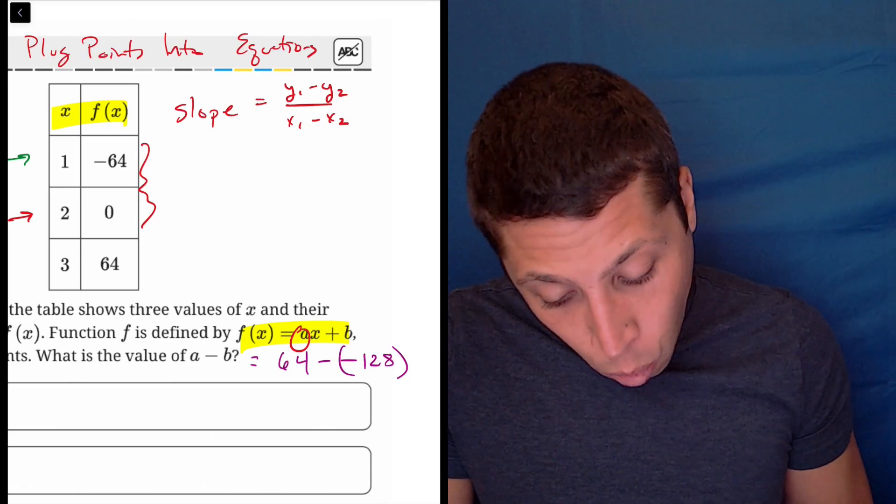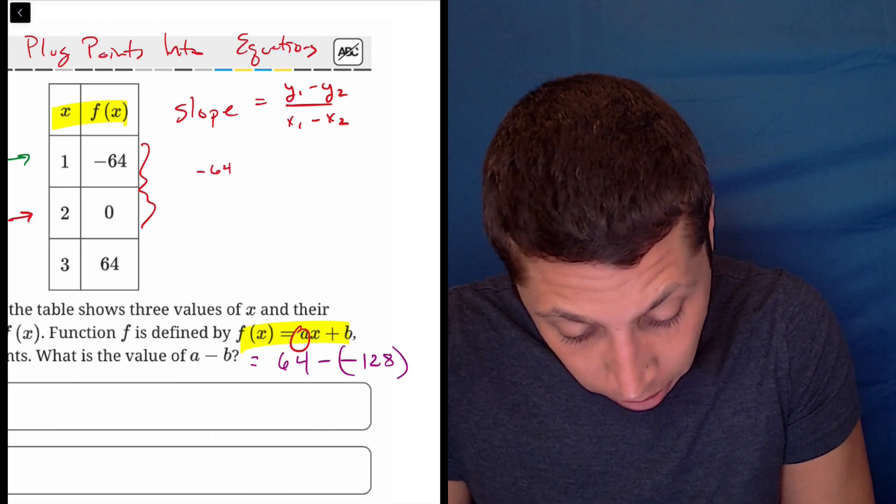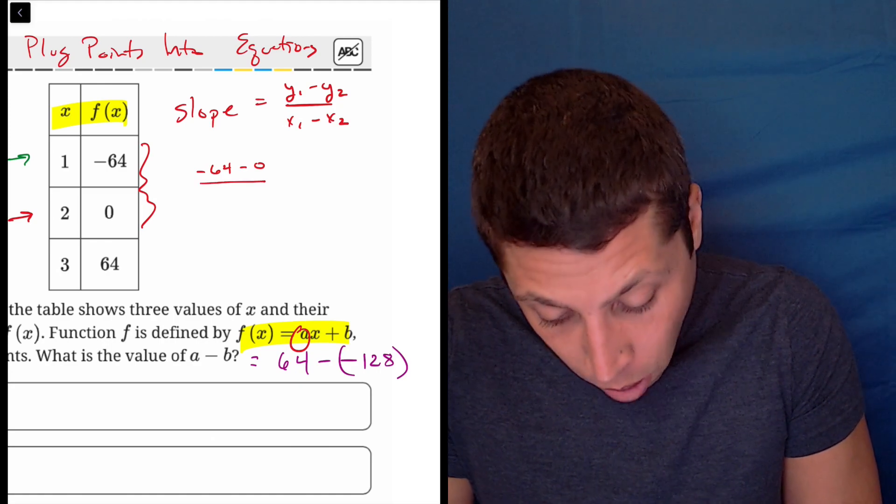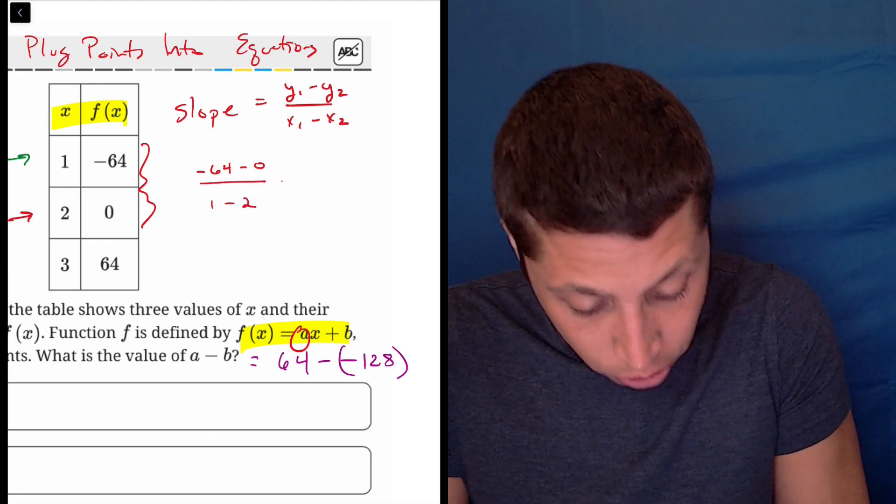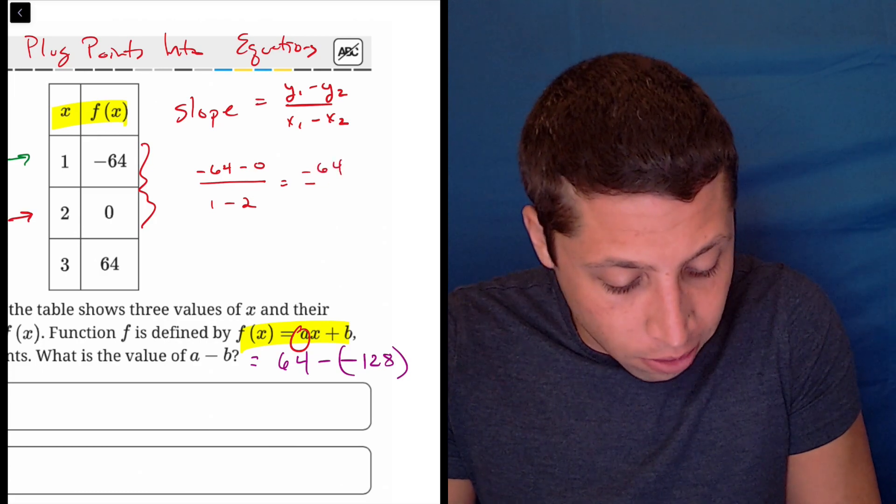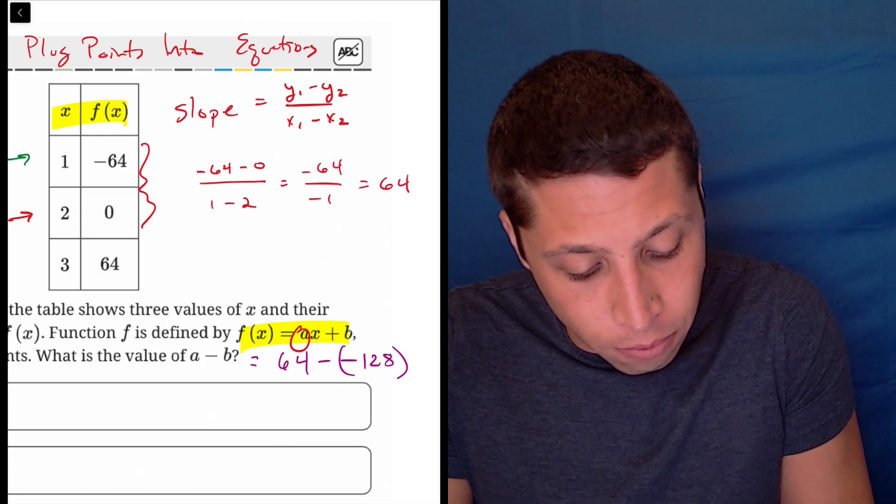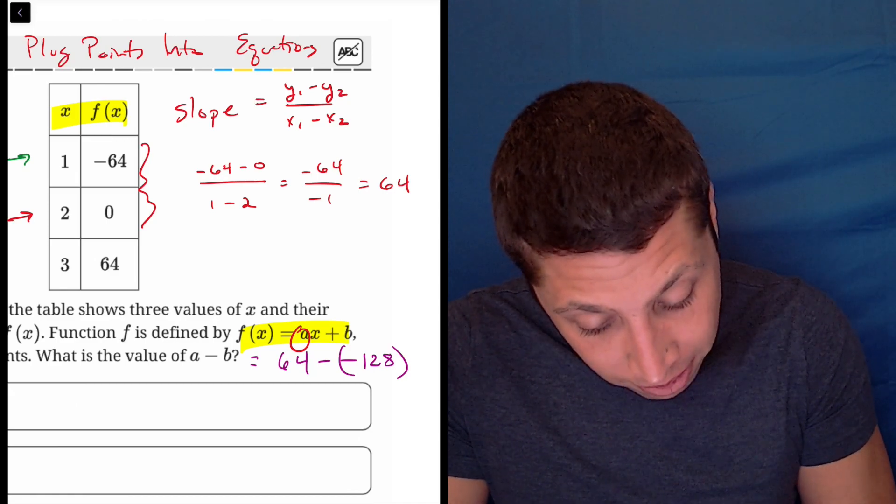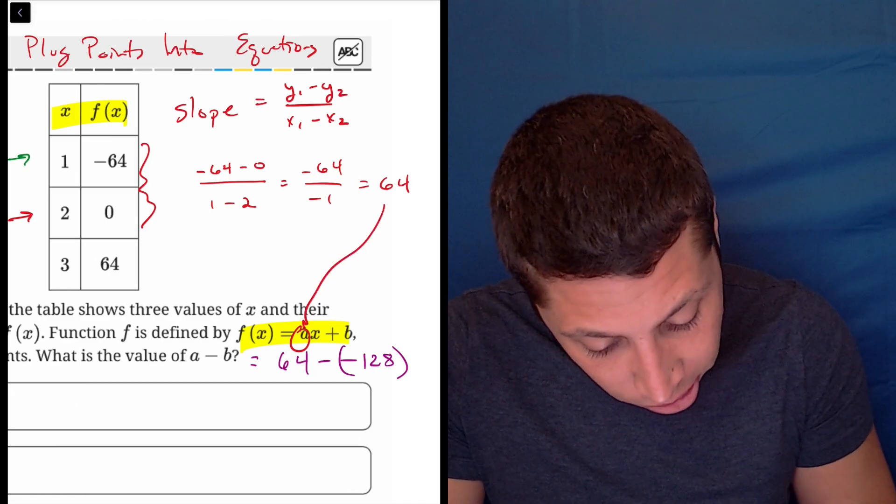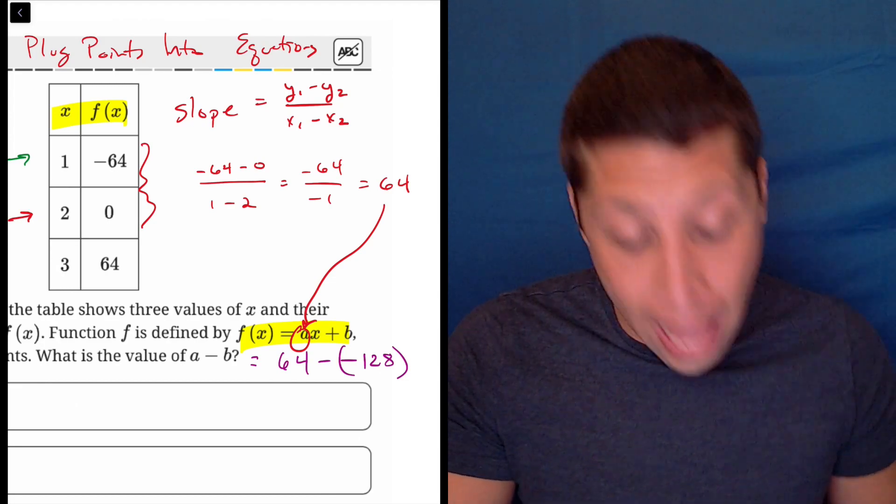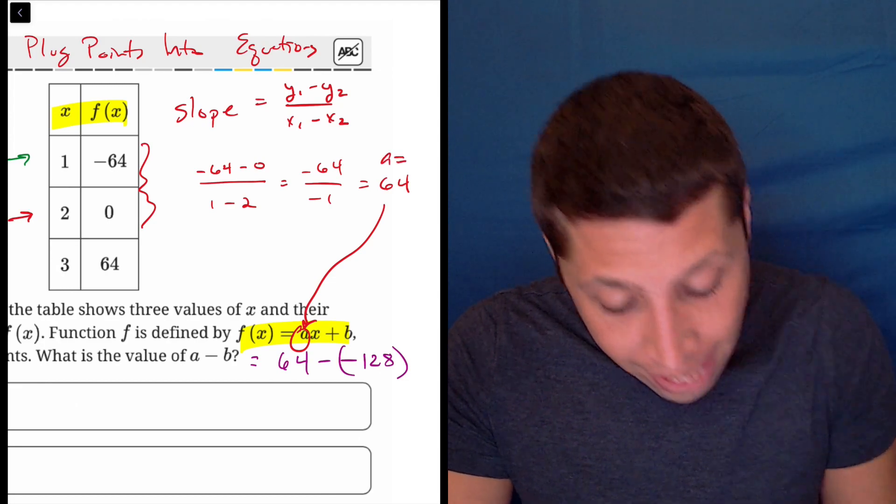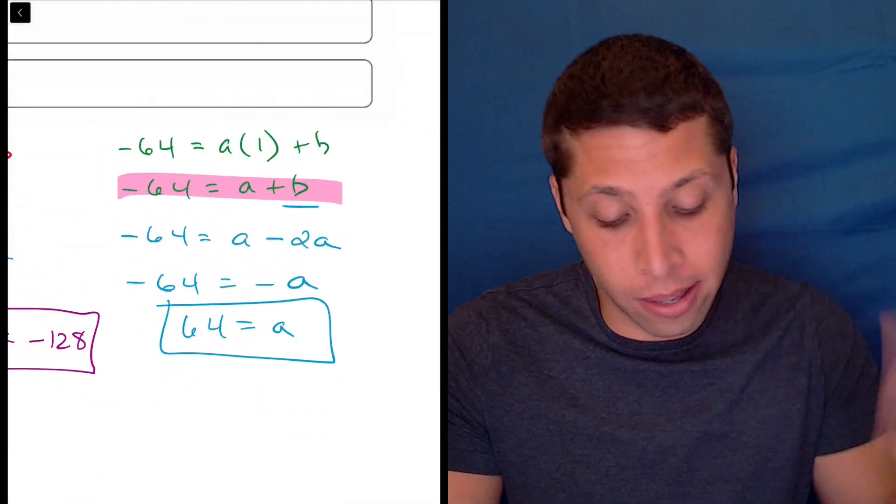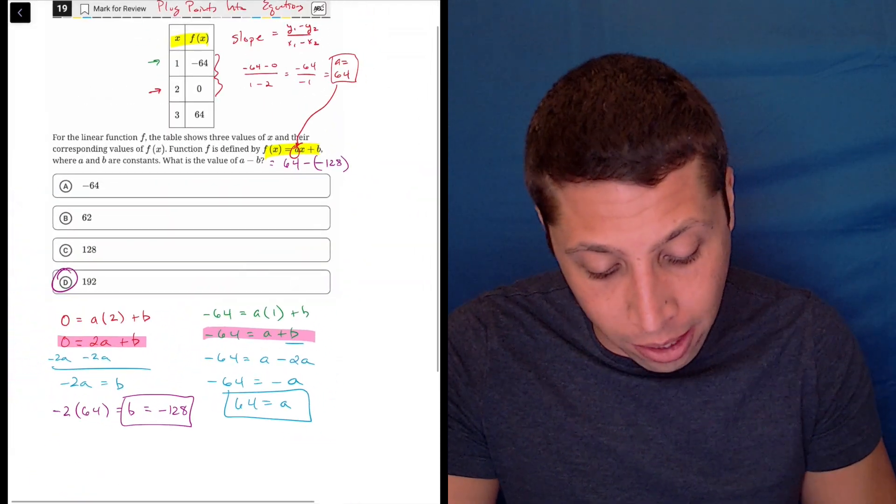So let's do that with just the two same points that we used. So y1 we're going to do is negative 64 minus 0 over x1 is 1 minus 2. So negative 64 over negative 1 is 64. So what is that 64? That is the slope of the line, and based on the equation that we had, the slope of the line is represented by the a. So we just found that a is equal to 64, and that's exactly what we found down here. So it's not a coincidence. It's just a different way of getting the same thing.